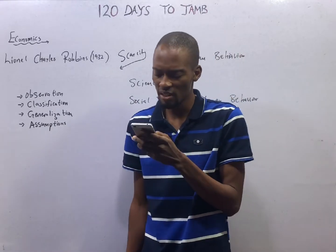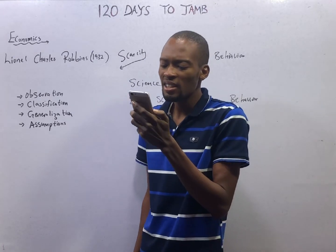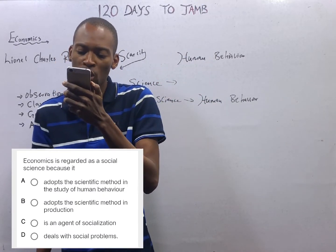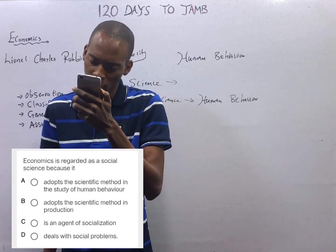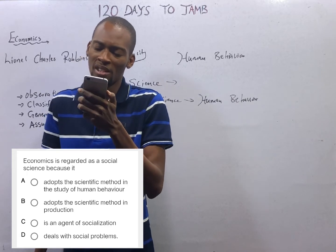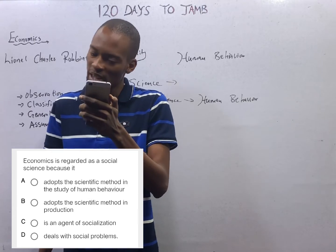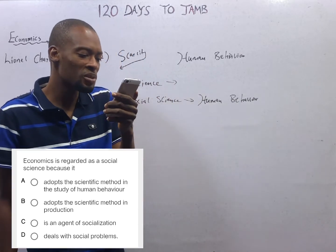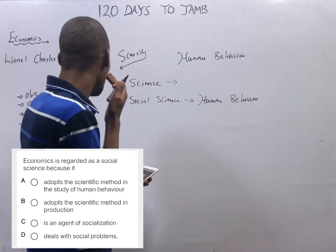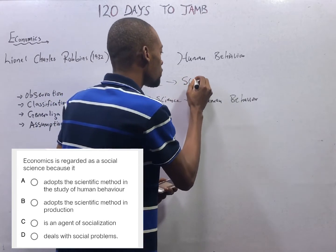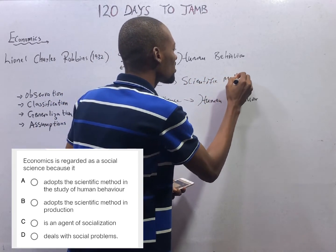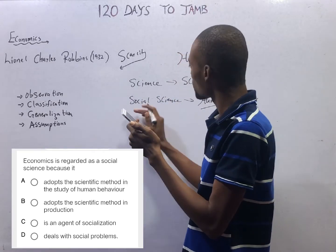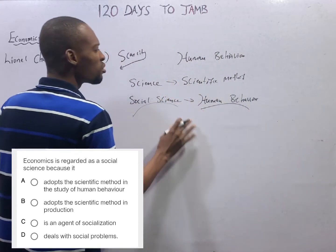Now look at this question from the Flash Nenas Jam application. It says: economics is regarded as a social science subject because — Option A: it adopts the scientific method in the study of human behavior. B: adopts the scientific method in production. C: is an agent of socialization. D: deals with social problems. The adoption of the scientific method in the study of human behavior makes it a social science subject.